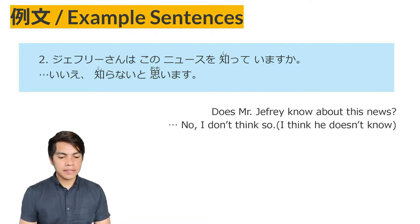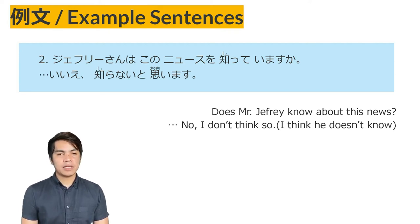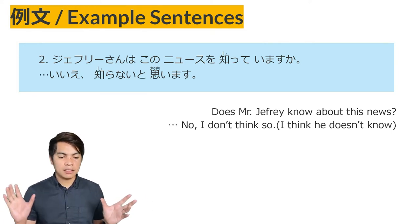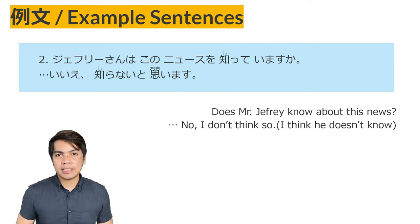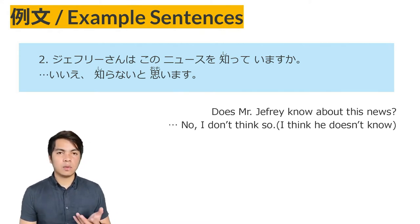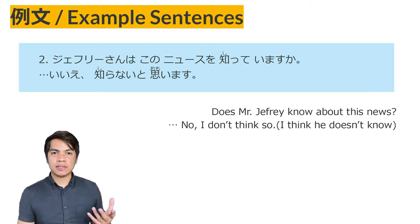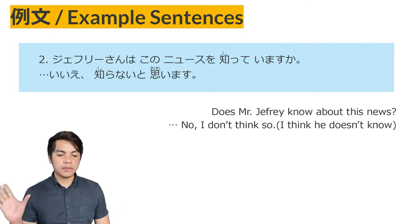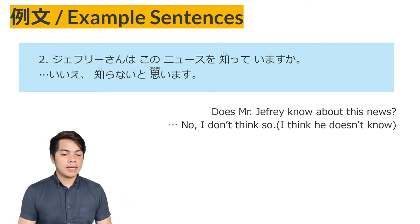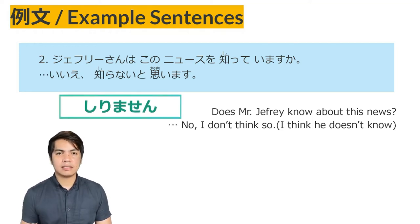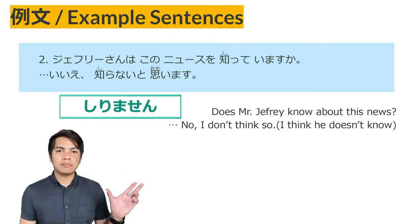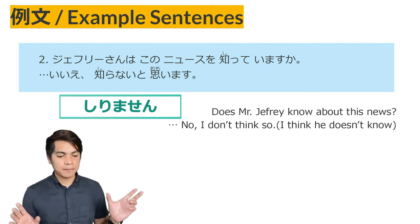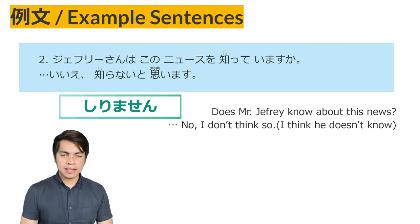Example sentence No. 2: 'Jeffrey-san wa kono nyuusu wo shitte imasu ka?' — Does Mr. Jeffrey know this news? He said 'Iie, shiranai to omoimasu.' Shiranai or shirimasen — he doesn't know. Shiranai is the plain form for shirimasen. From verb masen to verb nai form. Shiranai to omoimasu: I think he doesn't know. Example sentence No. 3: 'Shigoto to kazoku to dochira ga taisetsu desu ka?' — Between work and family, which one is important? He answered 'Dochira mo taisetsu da to omoimasu.' Dochira mo means 'both.' The plain form for taisetsu desu is taisetsu da. I think they are both important.